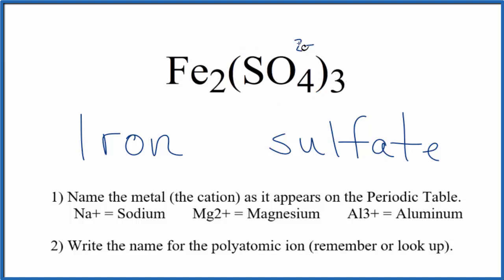So 3 times 2 minus, that's 6 minus. So we need a 6 plus over here with the iron to balance the charge out, to have a net charge of 0. 2 times 3 plus, that would give us 6 plus. So each iron atom has a charge of 3 plus. And we show that in the formula by putting the Roman numeral 3 in parentheses.